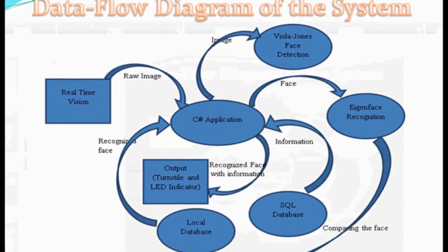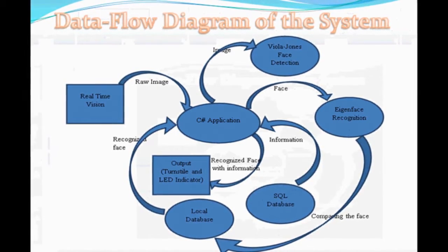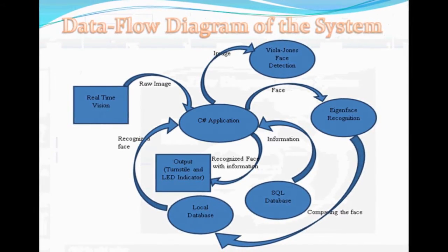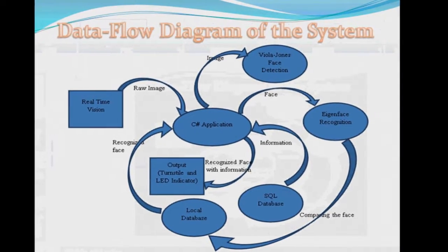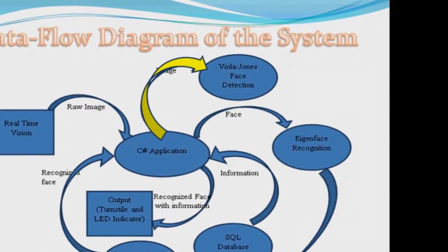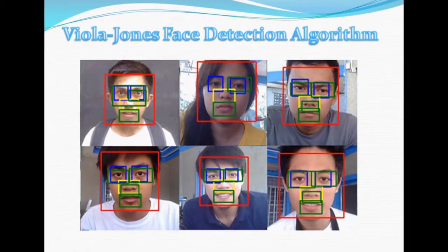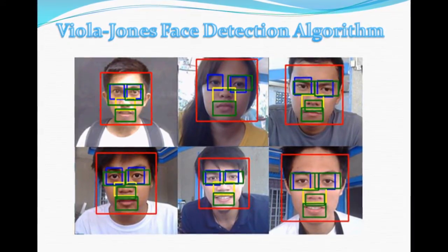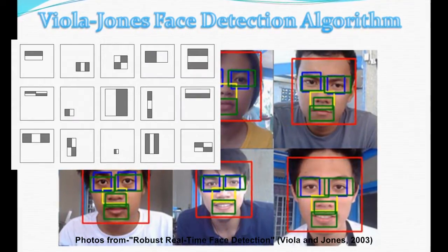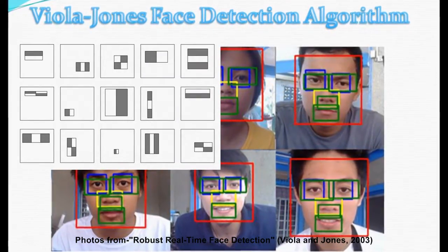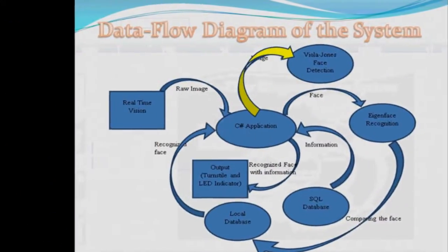As you can see in the diagram, real-time vision of the camera gives the input to the C-Sharp application, which is the main element of the system. After having a raw image, the system will undergo a process of face detection using Viola-Jones Face Detection Algorithm, which is composed of three techniques that make it faster to detect a face. The first technique is the representation of the integral images. The second is the AdaBoost feature selector. Lastly is the cascade of classifiers.